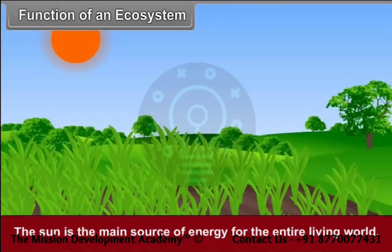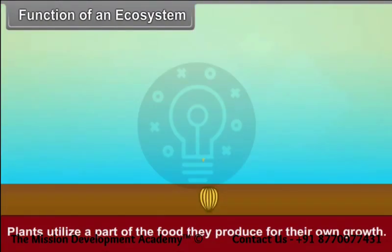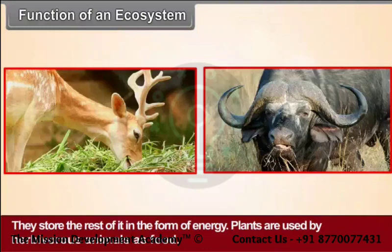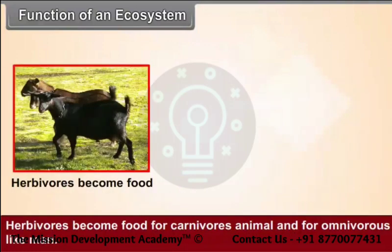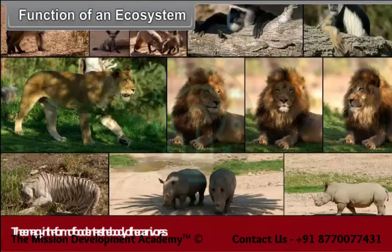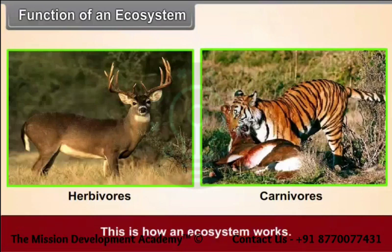Function of an Ecosystem: The sun is the main source of energy for the entire living world. Green plants produce food with the help of solar energy through the process of photosynthesis; hence they are called producers. Plants utilize a part of the food they produce for their own growth and store the rest in the form of energy. Plants are used by herbivorous animals as food, so herbivores get the organic energy stored by plants. Herbivores become food for carnivorous animals and for omnivores like man. The energy received by herbivores and carnivores is used for their physiological functions. This is how an ecosystem works.